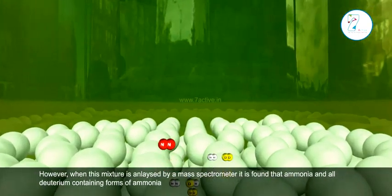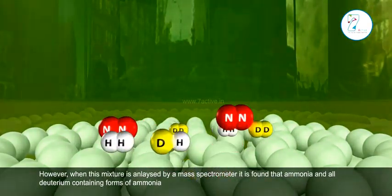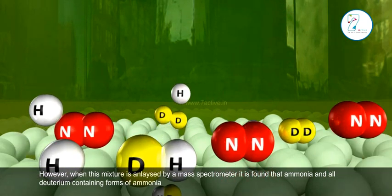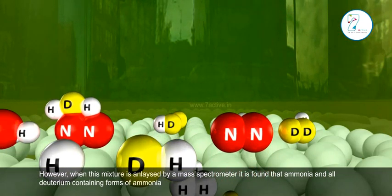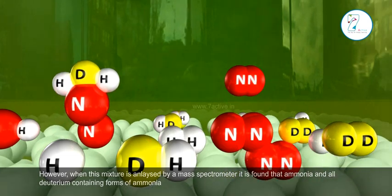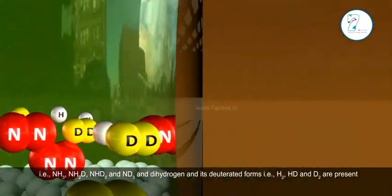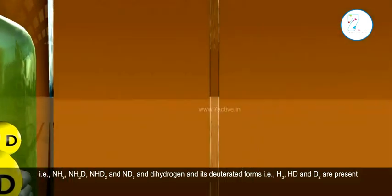However, when this mixture is analyzed by a mass spectrometer, it is found that ammonia and all deuterium-containing forms of ammonia—NH3, NH2D, NHD2, and ND3—are present.